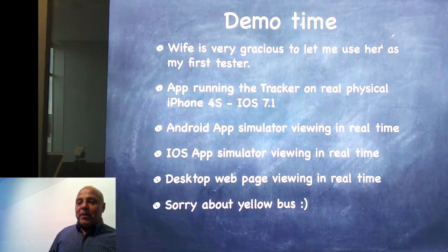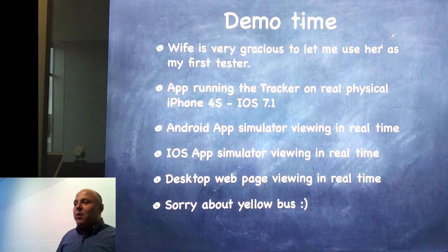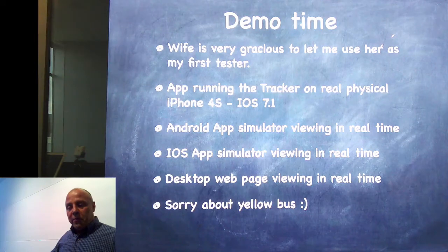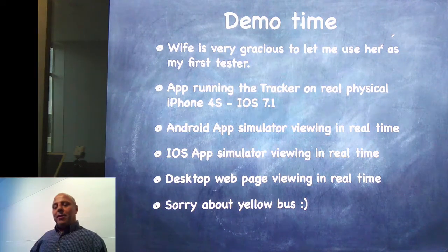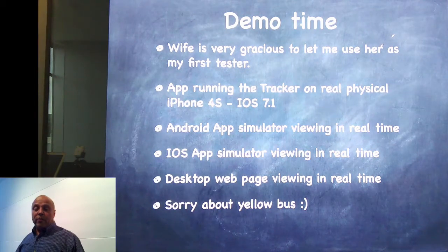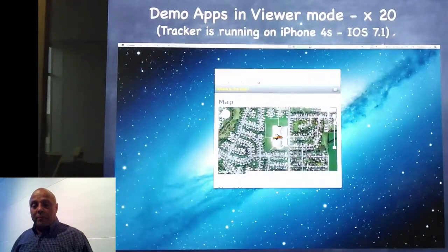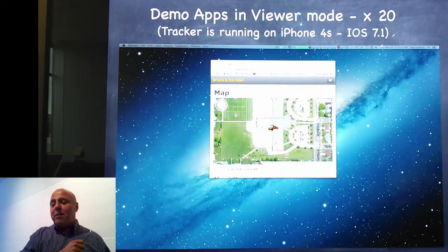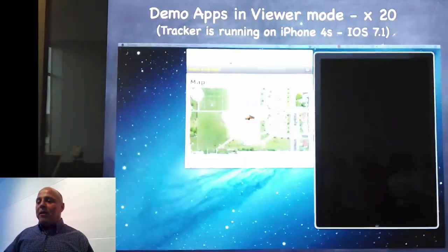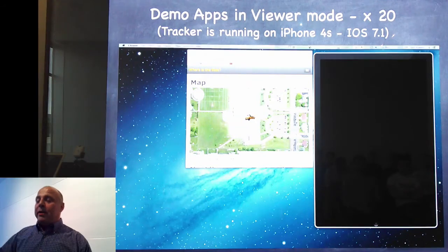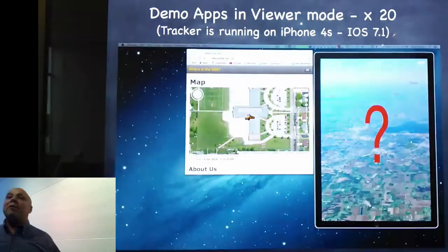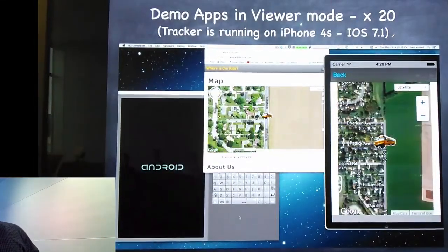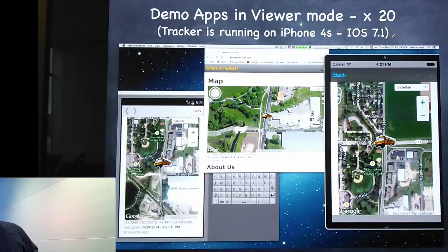My wife is very gracious to let me use her as my first tester. I took her iPhone — an iPhone 4S running iOS 7.1 — and installed my app on it. The demo has an Android simulator, another iOS simulator, and the desktop web page. I found out that day my wife was just about to leave work, so I hurried to my iMac and fired up a browser and an iOS simulator with a 4-inch Retina display. On the left-hand side we have the Android running the Nexus 1 with KitKat.